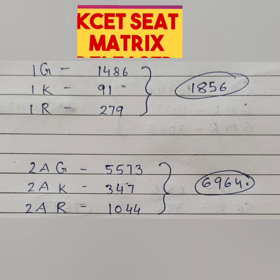Similarly, another category is called 2A. For 2A you have 2A general and 2A Kannada medium, for students who graduated from a Kannada medium school, and the last is rural. So 5500 seats are available for 2AG, 347 for 2AK, and 1044 for 2AR. Total, close to 7000 seats are available. So for category 1 students it's just under 2000 seats, and for category 2A students just under 7000 seats total.